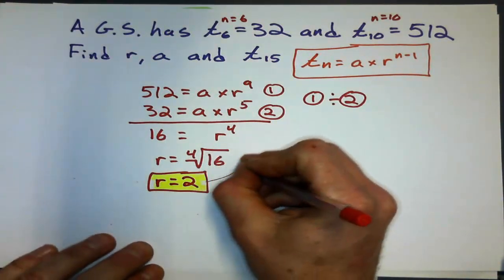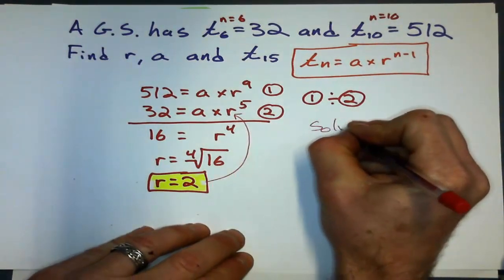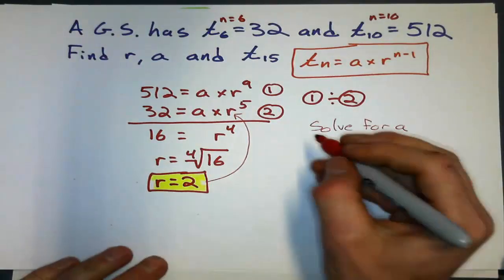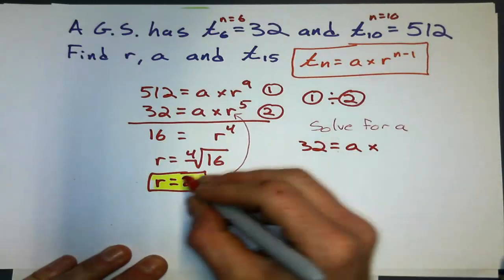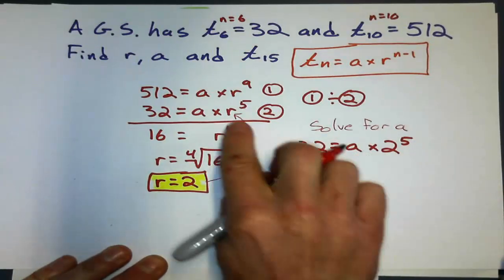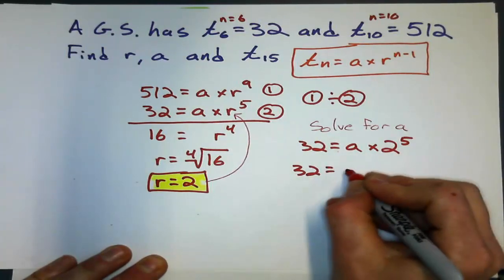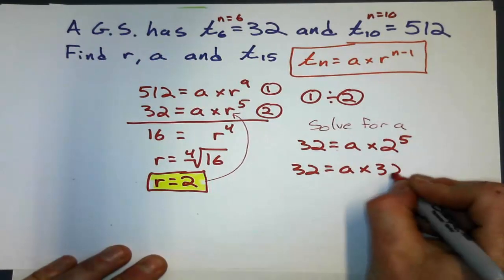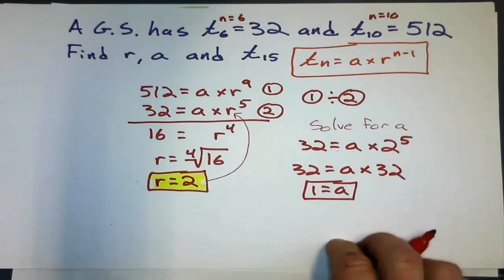I'm going to take that common ratio and substitute it back into there to solve for a. So, solve for a. This one looks a little bit different. Because I got 32 equals the first term times 2 to the fifth. I just have to simplify 2 to the fifth. 32 equals a times, hey, wait a minute. 2 to the fifth is 32. My common ratio, my first term is 1, once again.